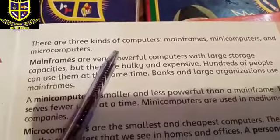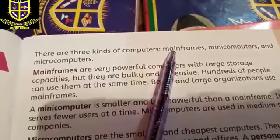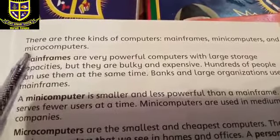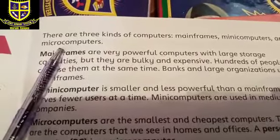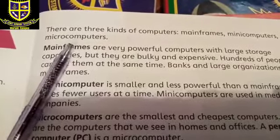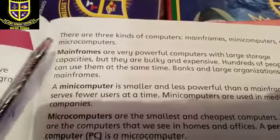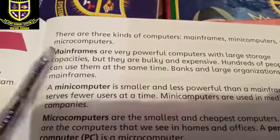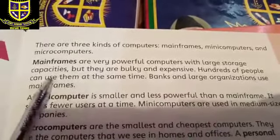Hamare paas computer ki kitni kismen hoti hain? Teen kismen hoti hain — three kinds of computers. Number one is mainframes, number two is mini computers, and number three is micro computers. Aaj hum in teeno ko one by one read karenge taake humhe in ki characteristics ka pata chale. Ab hum computer ki pehli kism ko padheinge jo hai mainframes. Mainframes are very powerful computers with large storage capacities.